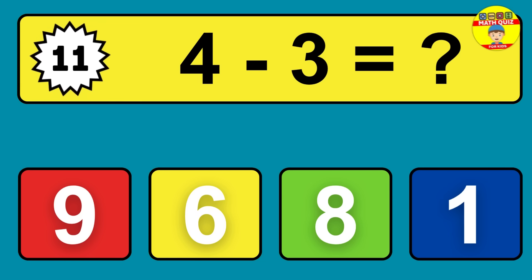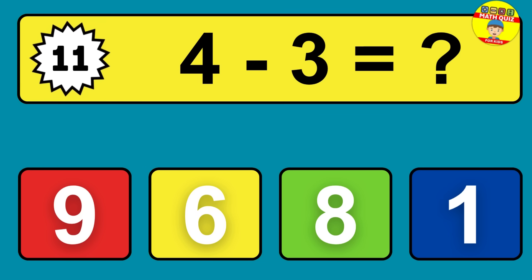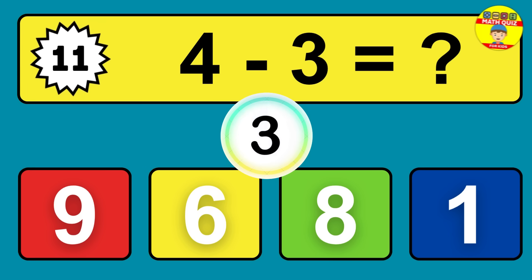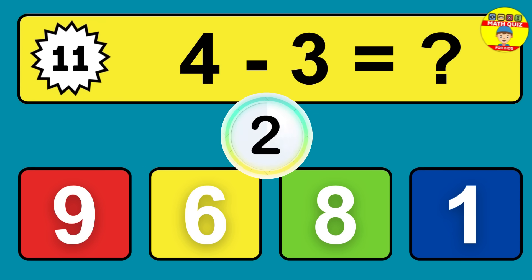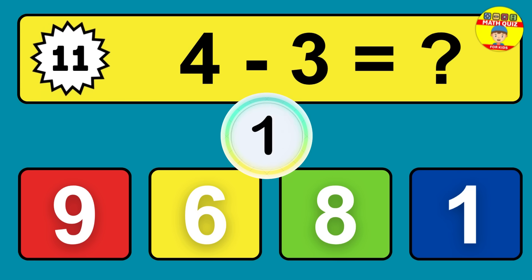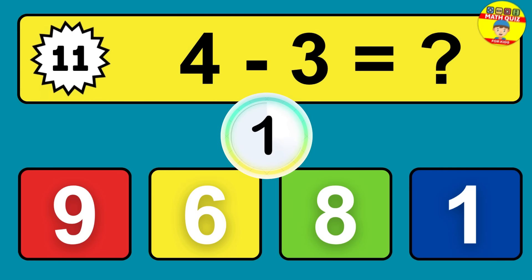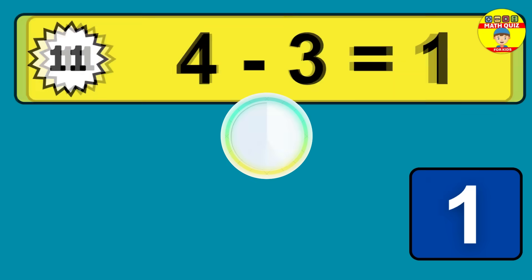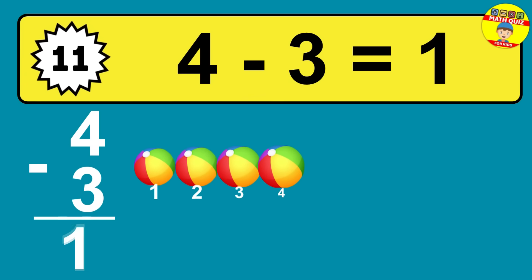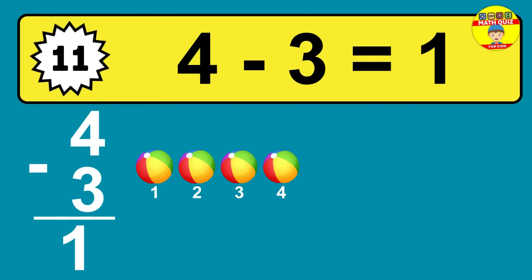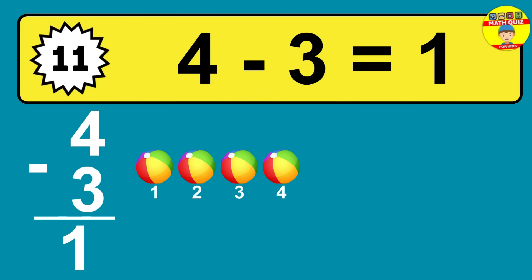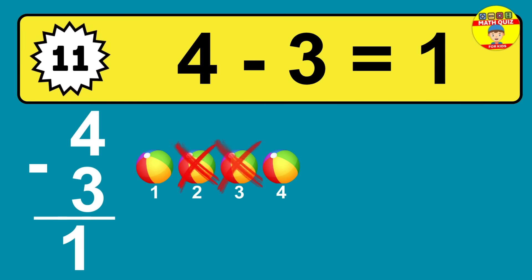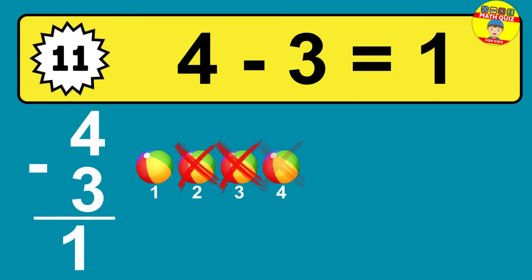Question 11: 4 minus 3 equals what? So the answer is 4 minus 3 is 1. Let's count it: 1.